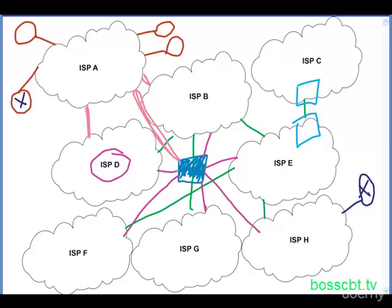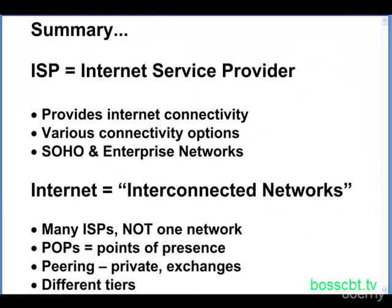To summarize: an ISP — internet service provider — provides your connectivity in many different ways, most often to a SoHo or enterprise network. The internet means interconnected networks — lots of networks all connected to each other, either directly or indirectly. Many ISPs make up the internet; it's not one network but a collection of many. POPs are points of presence where ISPs connect to clients and other networks — facilities with a lot of equipment. Peering is how ISPs connect to each other, and there are two types: private and internet exchange points. Finally, ISPs come in different tiers — tier one, two, and three — from largest to smallest, with different sizes and capabilities. That is the ISP and the internet tutorial. Thanks for watching.